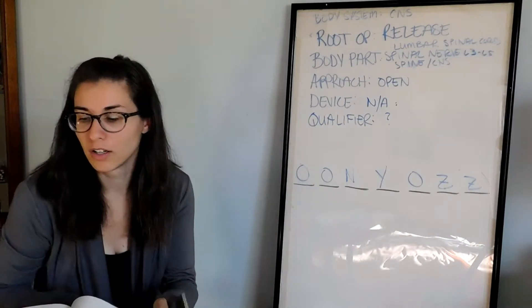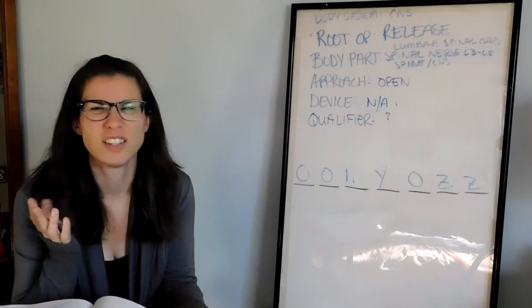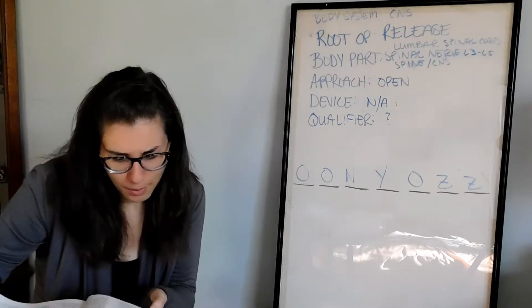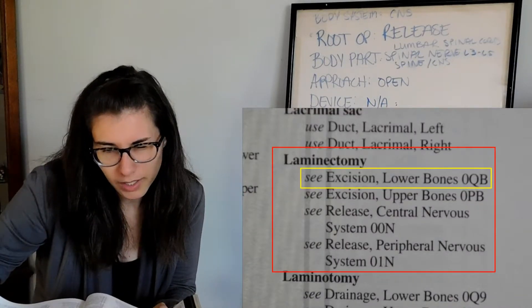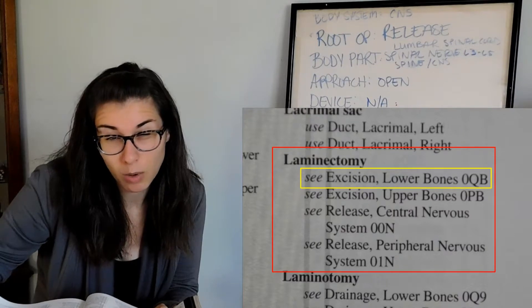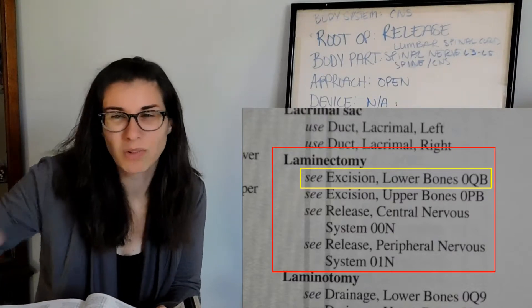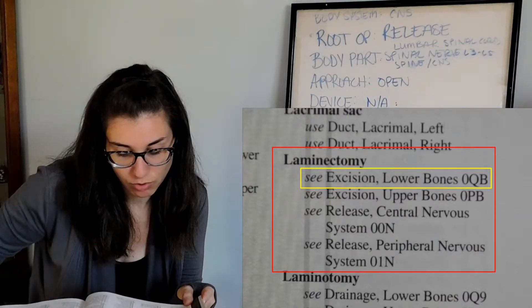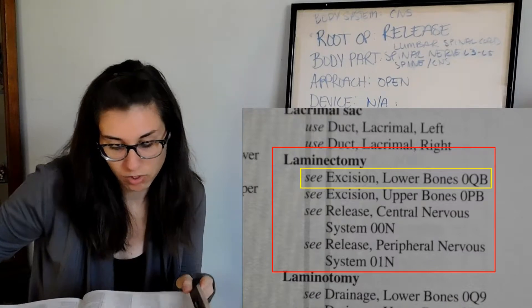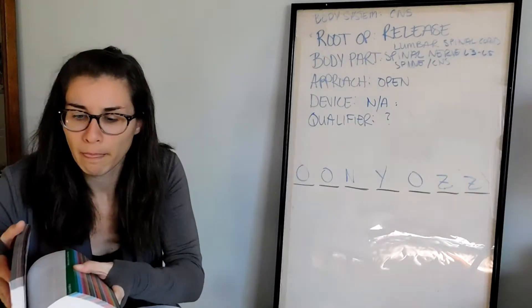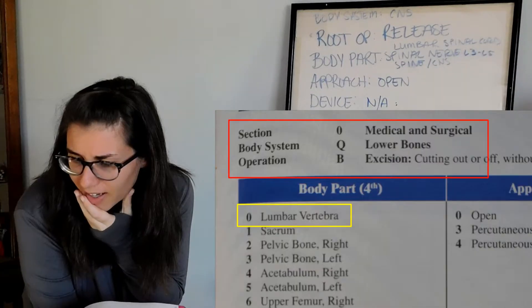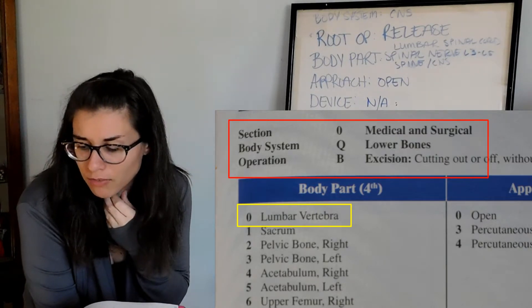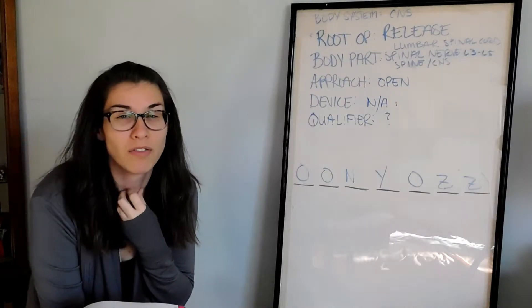Now I think we're going to look at excision just to see what that would do. So if we go back to laminectomy, the lumbar is in the lower bones. Because lower bones is at the lumbar and then down all the way to your feet. So we would choose excision lower bones O-Q-B.